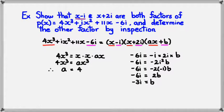So, with that in mind, now I've figured out what ax plus b is, which means I know the three factors. So the first factor was x minus i. The second factor is x plus 2i. And the third factor is 4x minus 3i.